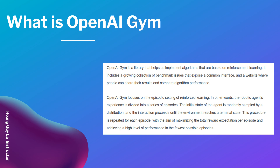OpenAI Gym focuses on the episodic setting of reinforcement learning. The robotic agent's experience is divided into a series of episodes. The initial state of the agent is randomly sampled from a distribution, and the interaction proceeds until the environment reaches a terminal state. This procedure is repeated for each episode with the aim of maximizing total reward per episode and achieving a high level of performance in the fewest possible episodes.